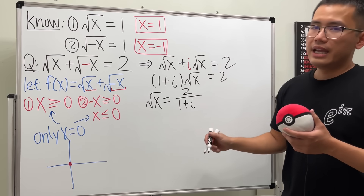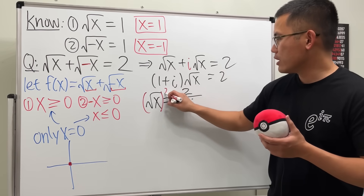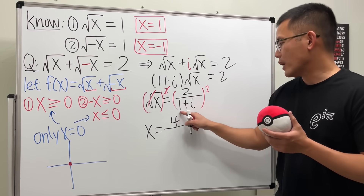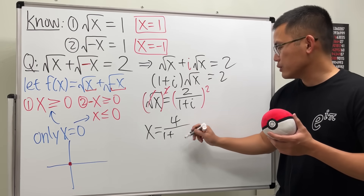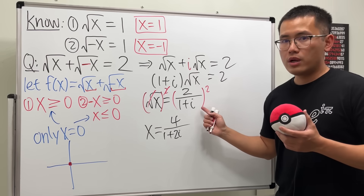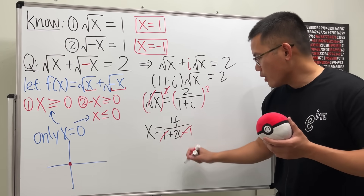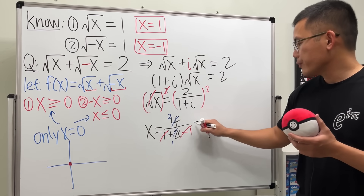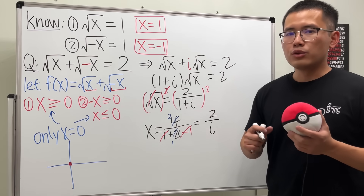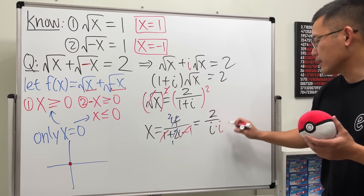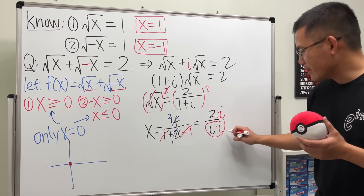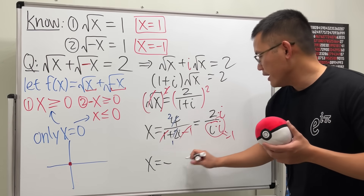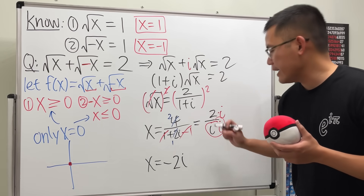Dividing both sides by (1 + i) and then squaring both sides: 2² = 4, and (1 + i)² = 1 + 2i + i² = 1 + 2i - 1 = 2i. So x = 4 / (2i) = 2/i. Since I don't like i on the bottom, multiply top and bottom by i: we get 2i / i² = 2i / (-1), so x = -2i.